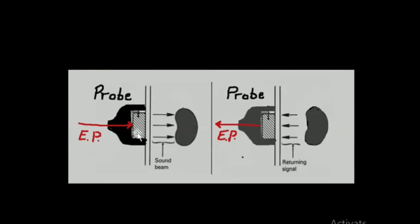This produces the sound beam that propagates through the tissue. This is the probe when it is electrically stimulated. It's changing its shape and vibrates.